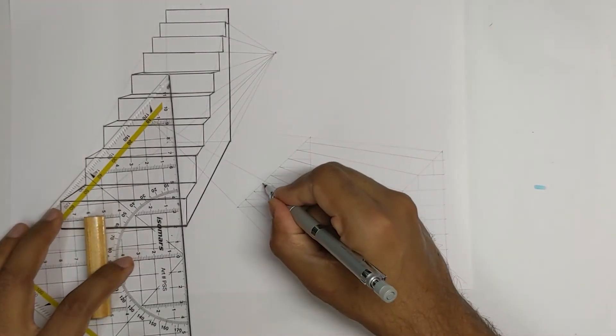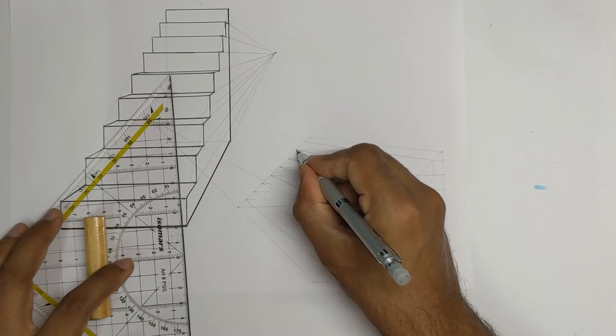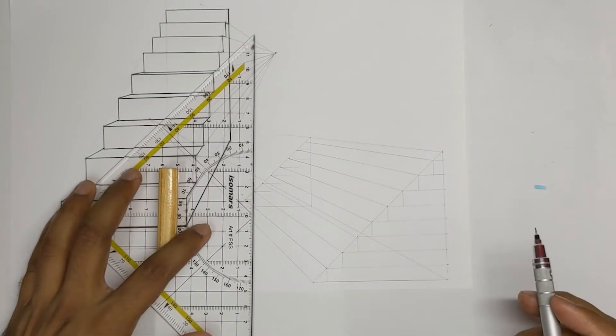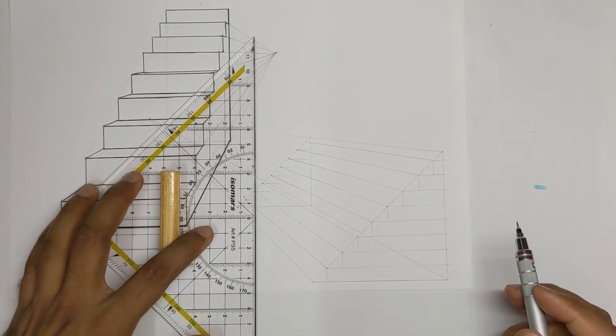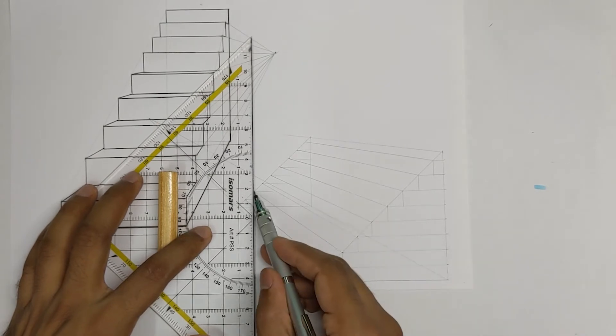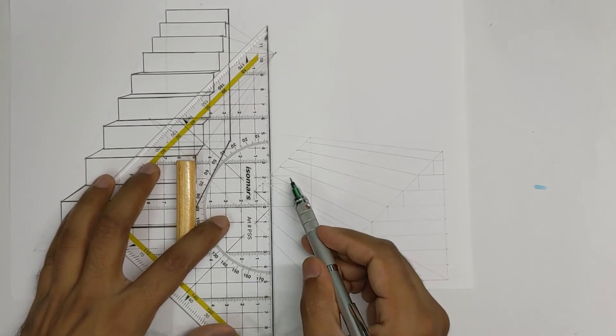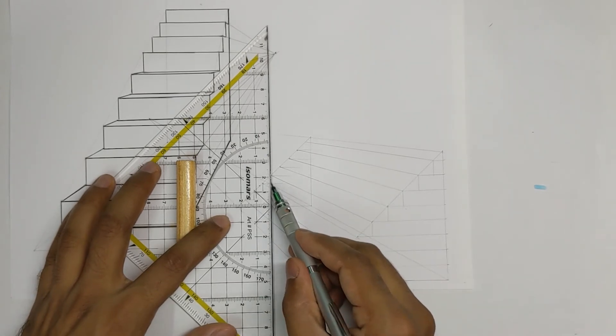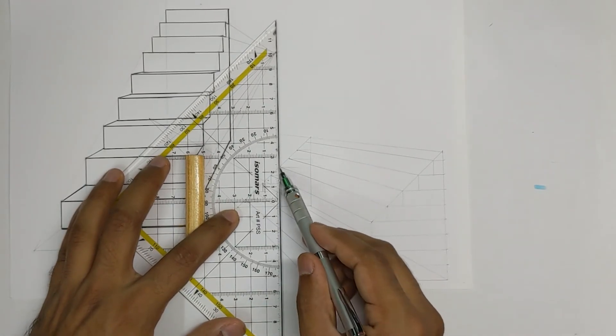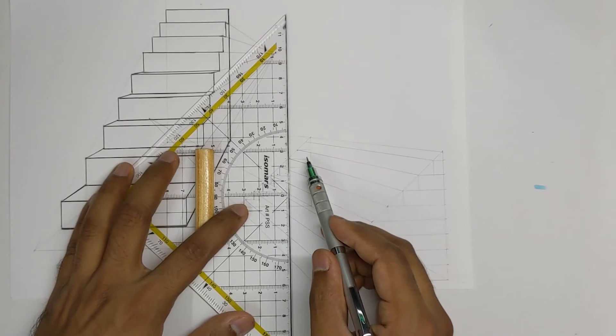Okay and from the intersection points that we had earlier draw perfect vertical lines. So it's just a game of drawing horizontal and vertical lines and of course with the lines going to the vanishing point.